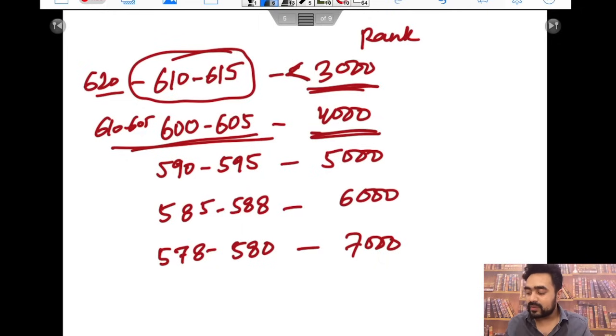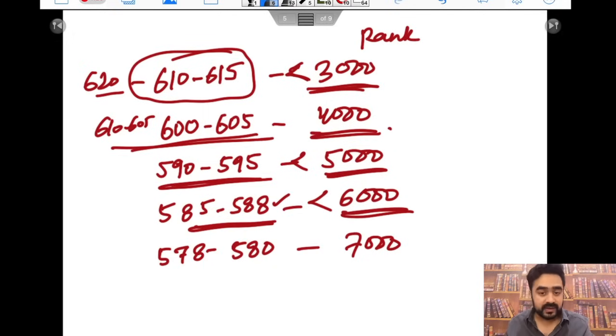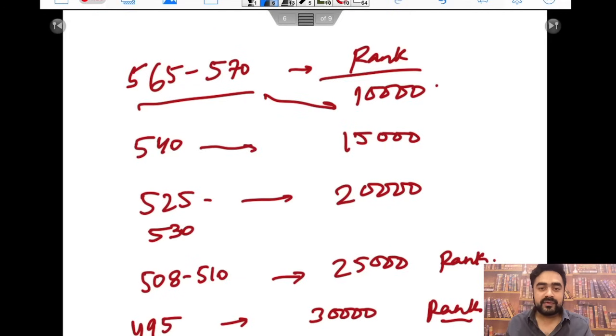Similarly, 590 to 595, if you are getting in this range, you can get a rank up to 5000 or under 5000. Then 585 to 588 - each mark can contain around 300 ranks, so 585 to 590 you can expect a rank under 6000. If you are scoring 578 to 580, you can expect a rank around 7000. If you are expecting your score to be 565 to 570, you can get a rank under 10000.